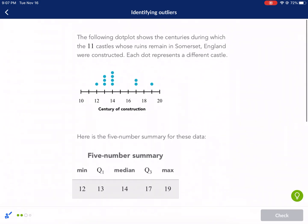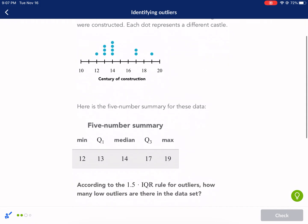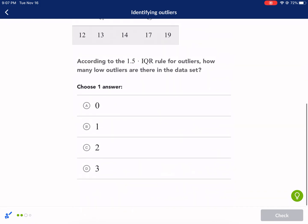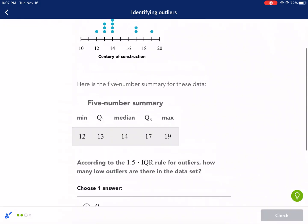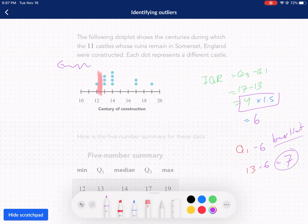So 7 is the lowest number, this is my lower limit. Let's take a look at our data. What numbers are below 7? The dot plot shows the centuries during which the 11 castles were built. There's no numbers outside of our lower limit, so yeah, there's no outliers.